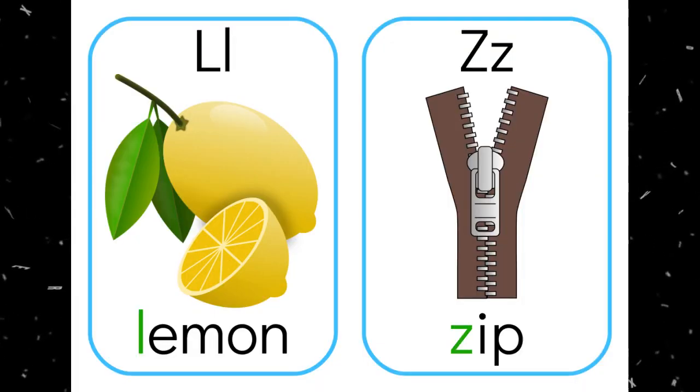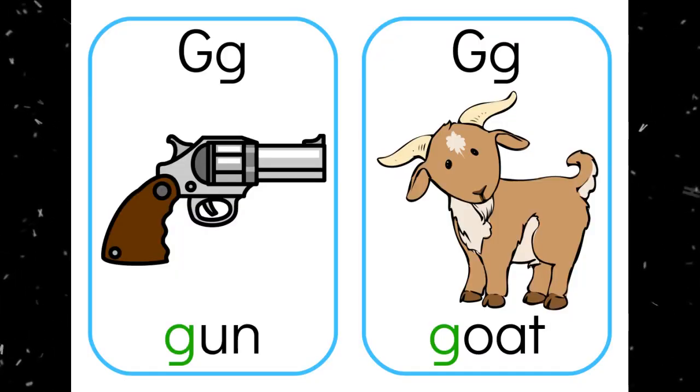And finally, I included a set of alternatives for a few letters, like zip instead of zipper if you prefer English pronunciation, and a few other words as well, such as goat and g-u-n, which is a perfectly fine phonics word, but some teachers may not find it appropriate or may not be allowed to use it, so it's there if you want it.